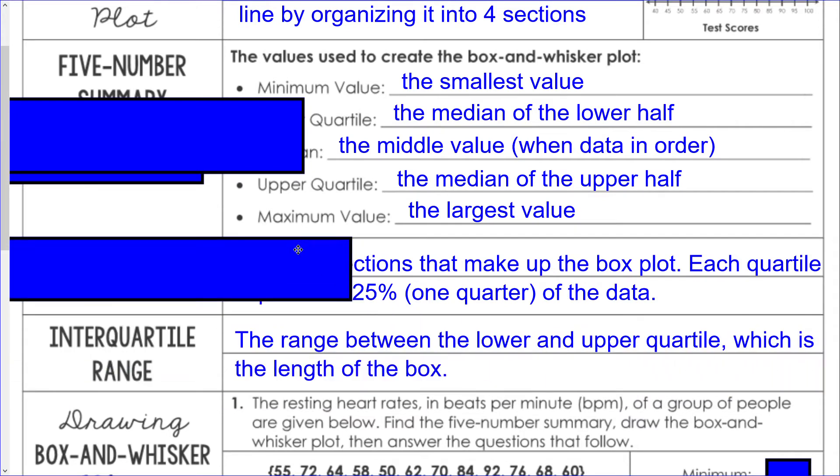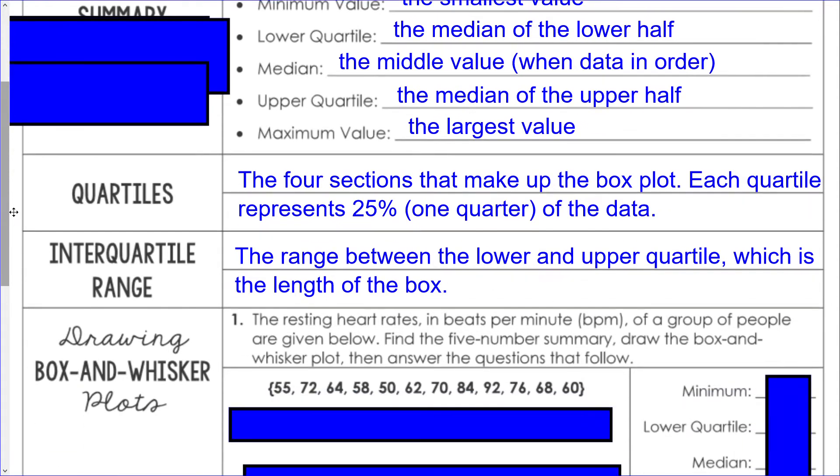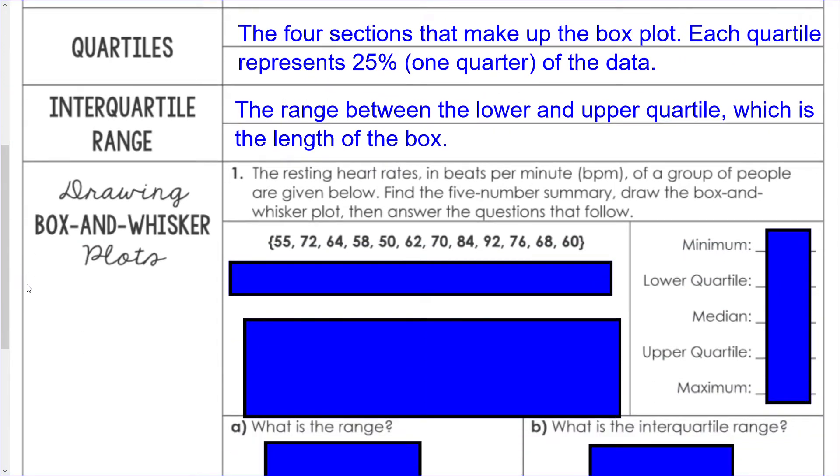The interquartile range is the range between the lower and upper quartile numbers, which is going to be the length of the box that you will draw.